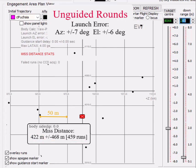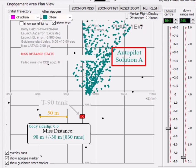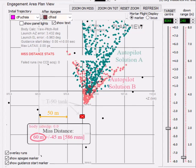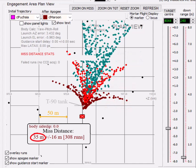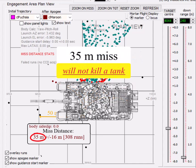Now let's look at the hit points for a guided mortar using autopilot solution A, where the mean missed distance goes from unguided 422 meters to solution A 98 meters. Then solution B, which gives 60 meters, then solution C, which goes to a mean missed distance of 35 meters. But 35 meters isn't close enough to kill a tank.